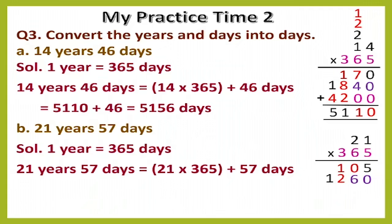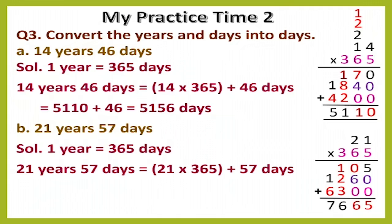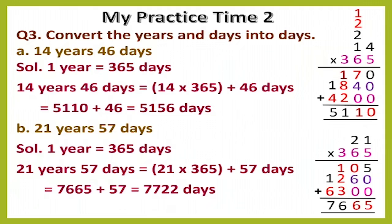Put 2 zeros, then multiply 3 by 21: 3 ones are 3, then 3 twos are 6. Now add all the numbers: 5+0+0=5; 0+6+0=6; 1+2+3=6; 1+6=7. So after multiplying we get 7665. Now add 57 to get 7722 days.